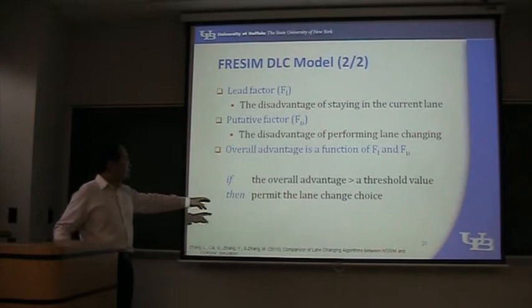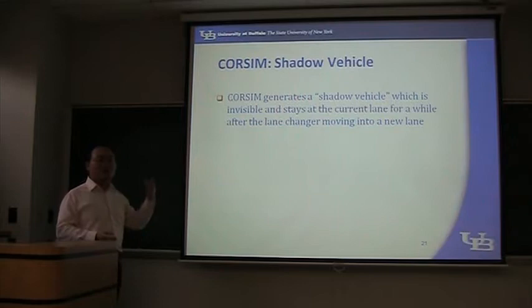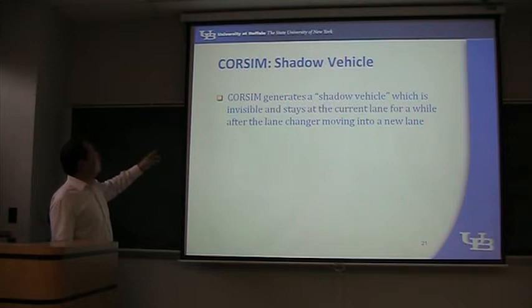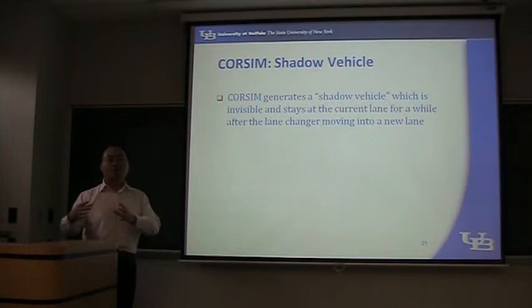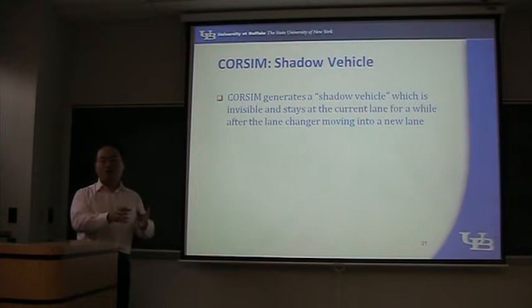If the lane change choice is committed, the big freezing will try to find the gap using the gap acceptance model. The gap acceptance model is very similar to the previous one. In CORSAIR, a shadow vehicle is generated when the lane change is performed. So you change to a faster lane, but there will be a shadow vehicle created at the same location you left. This shadow vehicle will be invisible and will stay a while, so there will be no changing back to the original lane.